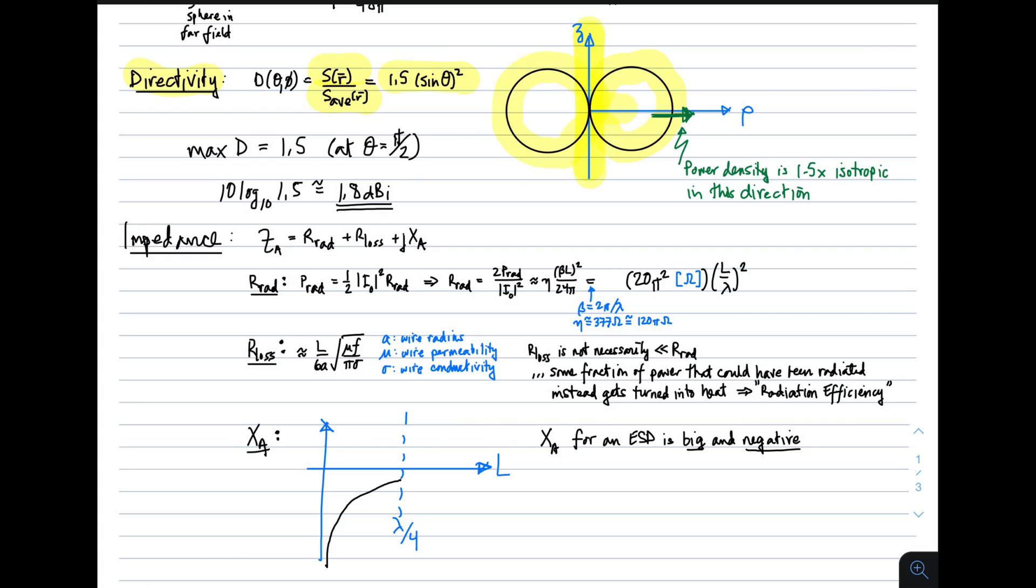Right, so we see maximum directivity, broadside. And the power density is evidently 1.5 times isotropic in that direction. So, the maximum power density is 1.5 times isotropic. The minimum power density, which is what we see along the axis, is zero. And that's what this line is saying.